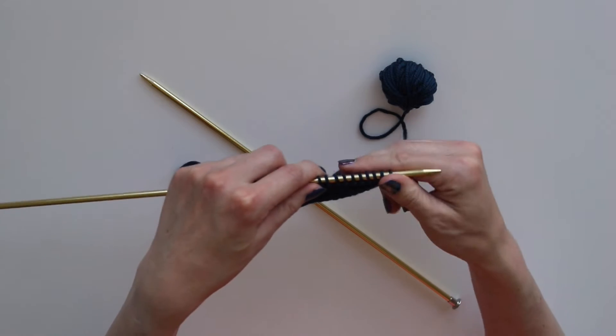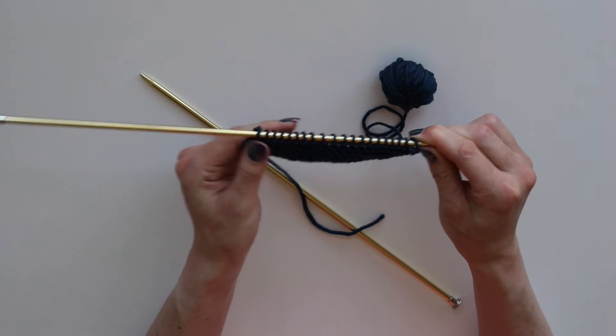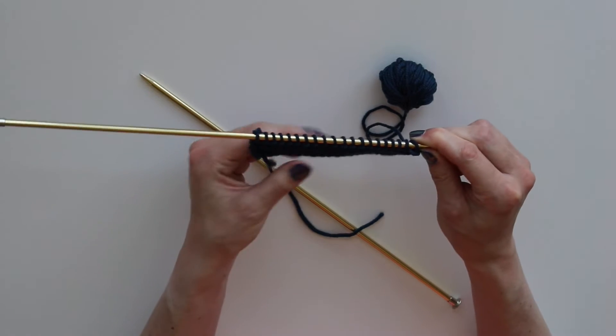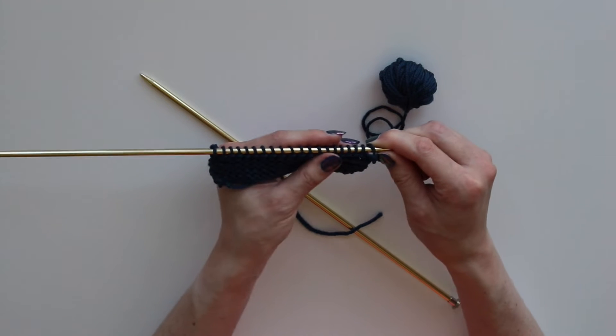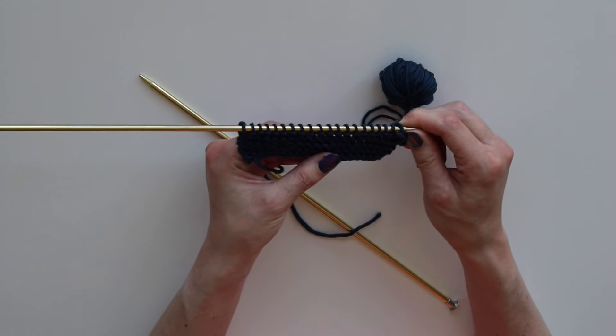Garter stitch is a pattern that makes a fabric that looks the same on both sides. One thing to note before knitting this pattern is that the back of a knit stitch will look like a purl stitch, and the back of a purl stitch will look like a knit stitch.